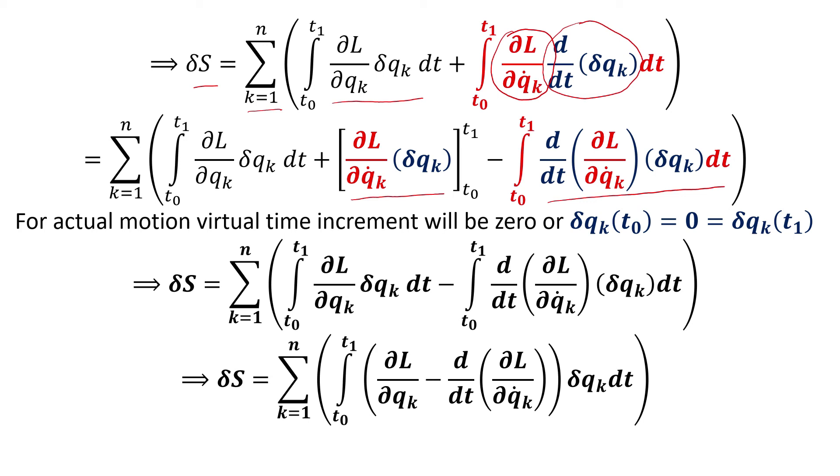Now we know that for actual motion, δqk(t0) = 0 and δqk(t1) = 0. Therefore, this boundary term becomes zero. The value of δS then consists of the remaining two terms, which are written below.